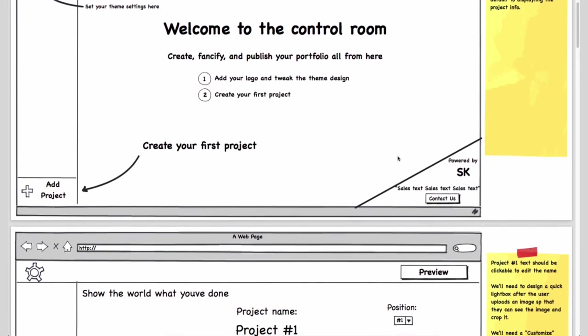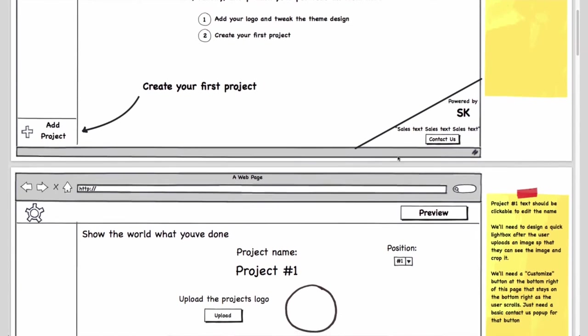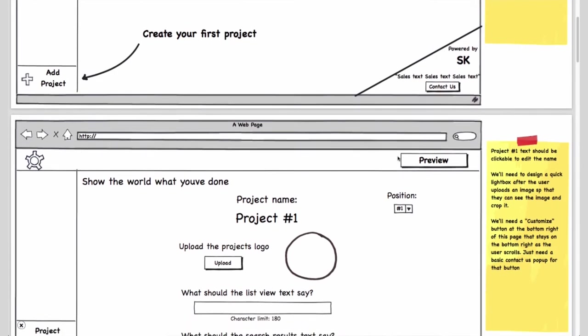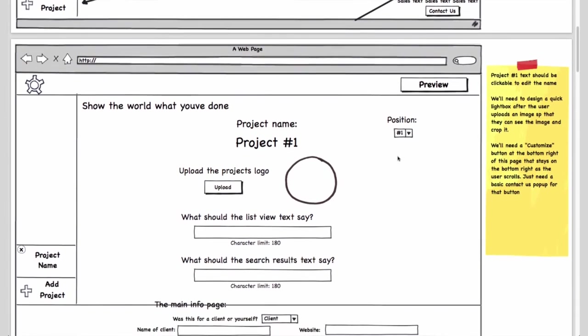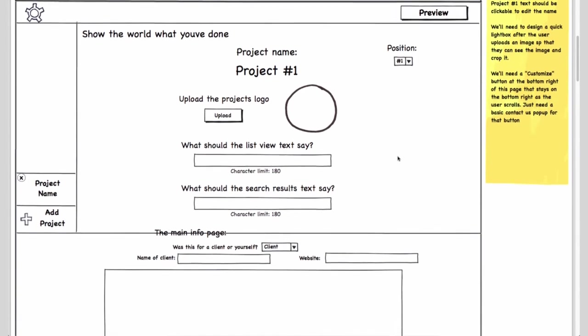Sometimes a wireframe will have copywriting, will have text in it, so we'll have headlines already written into it. Now sometimes they also don't, sometimes they have generic text like lorem ipsum or just gibberish.